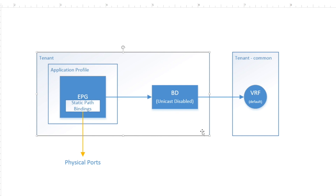All use case number one constructs are going to be isolated within a tenant. You have your tenant, you have your application profile, and within that application profile we are going to create an EPG. Every EPG needs to reference a BD, so we are going to create a BD. Within the BD, we are going to disable unicast routing — there is an option in BD to disable or enable unicast routing, and since we don't need it, we are going to disable it at the BD level.